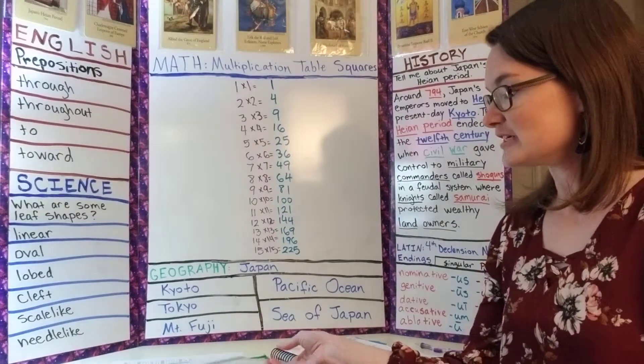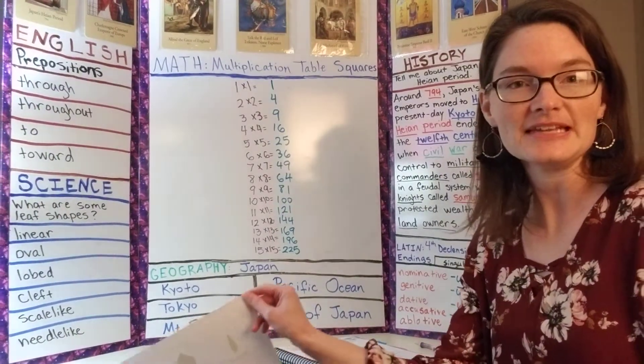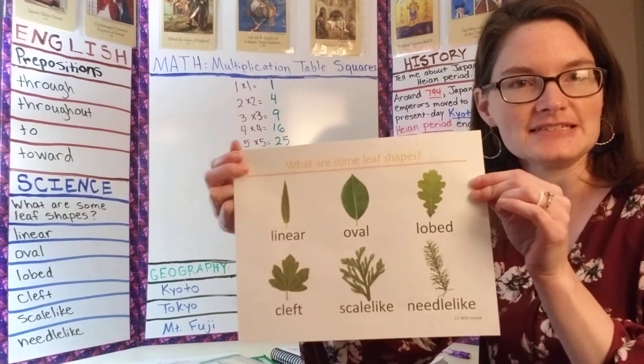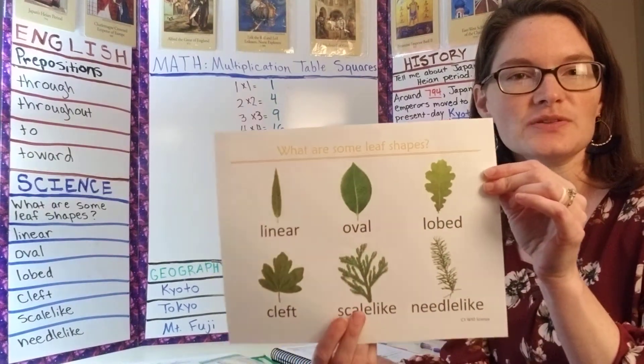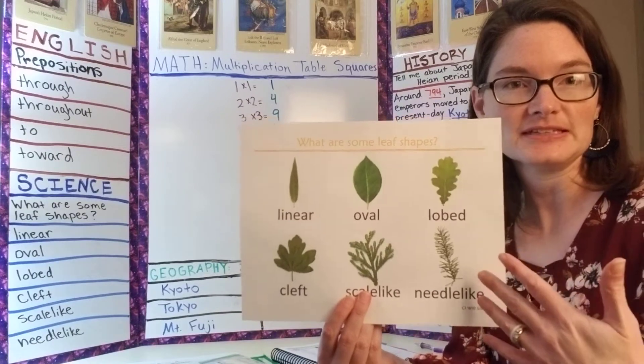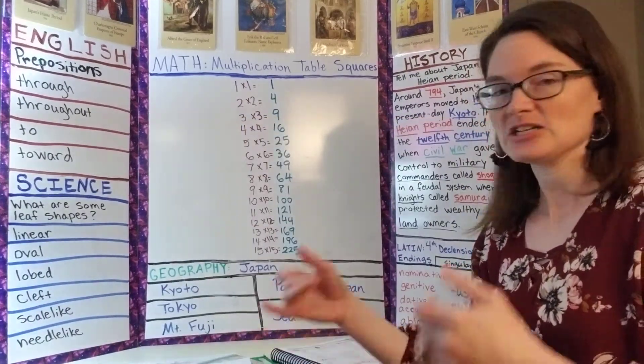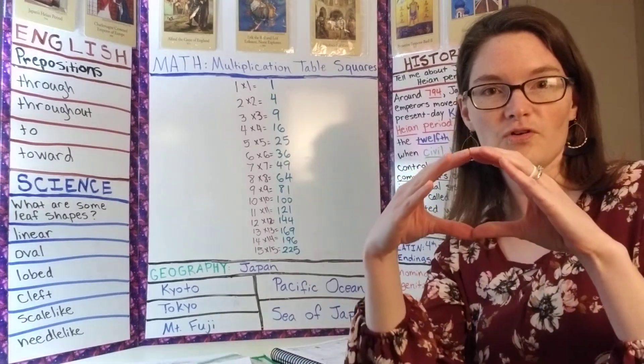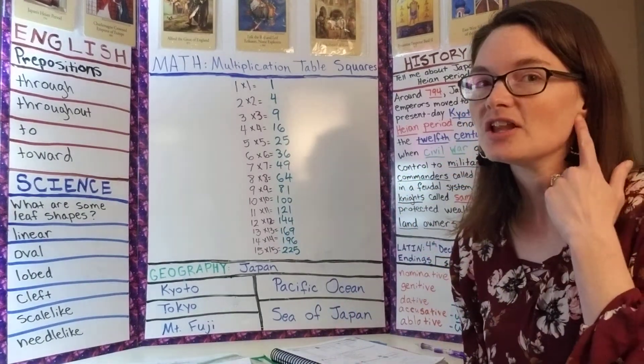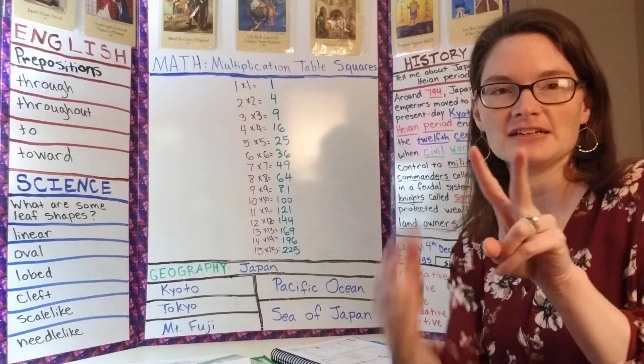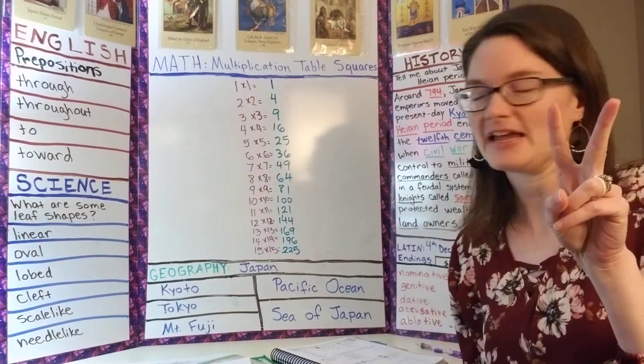And then for science, what are some leaf shapes? I found this science tri-fold on CC Connected and showed them some examples of what the different leaf shapes are. Then we did some hand motions. We did linear, oval, and then we have lobed like your earlobe, and then cleft like a V there.